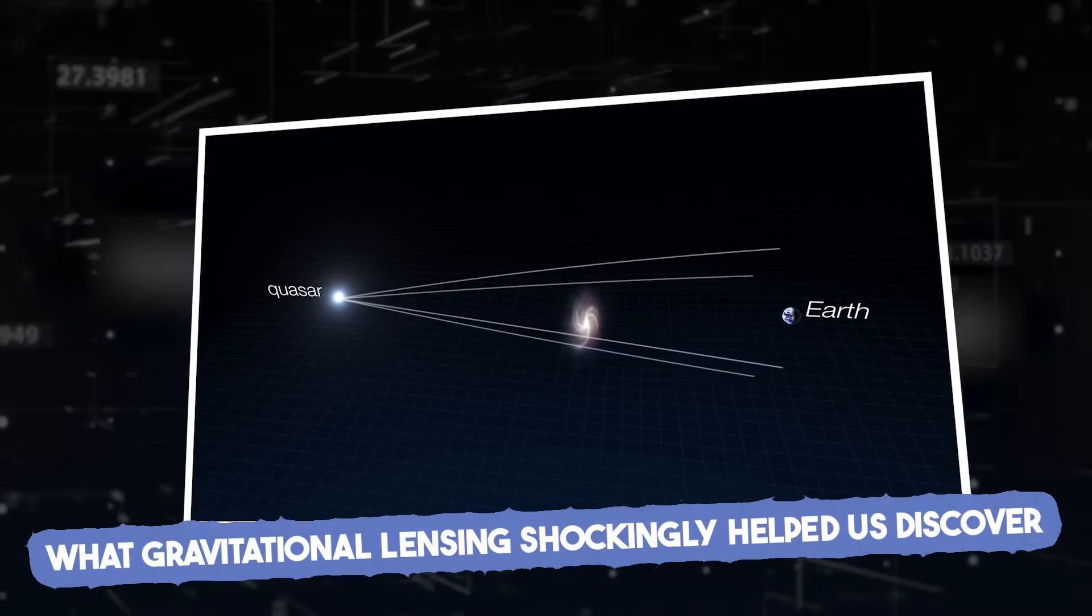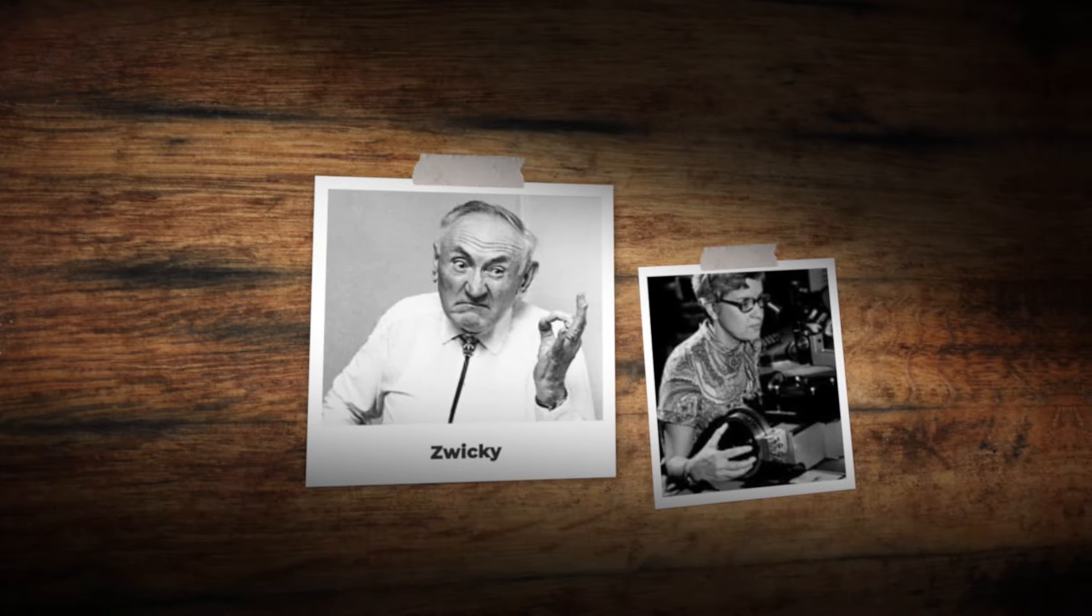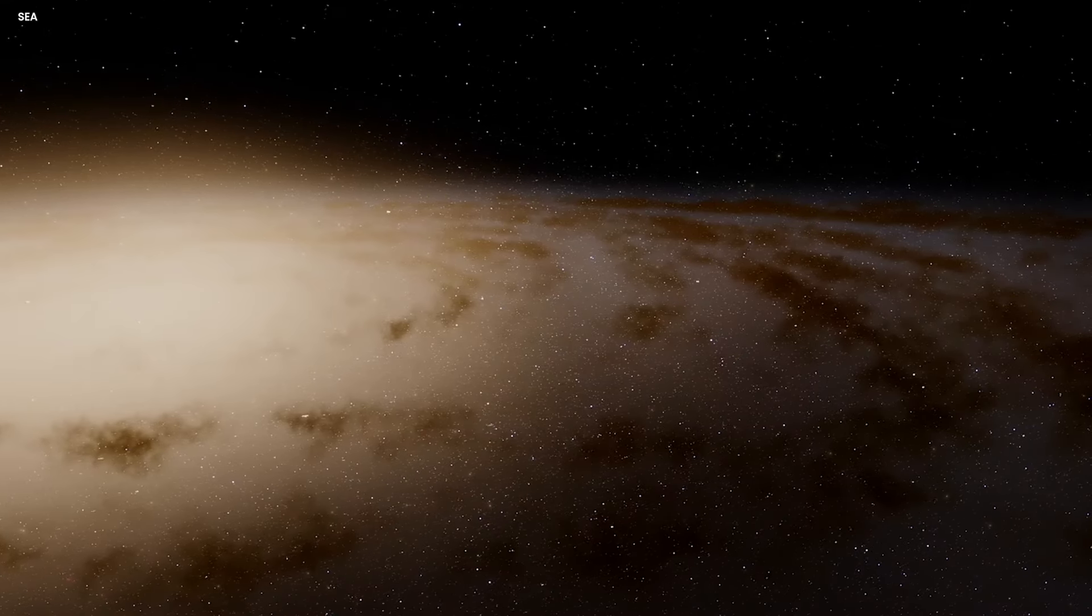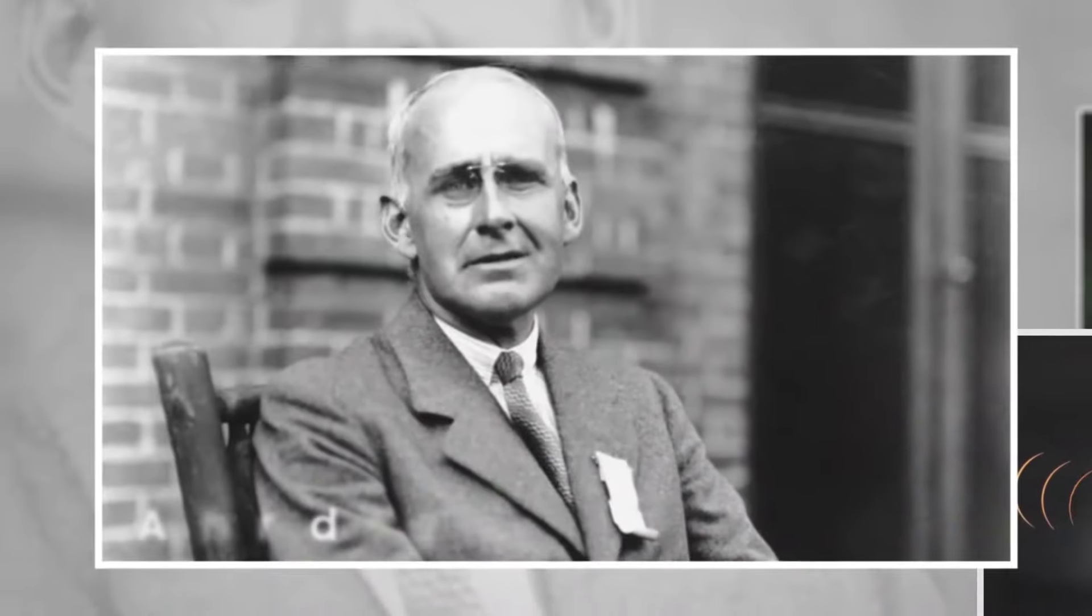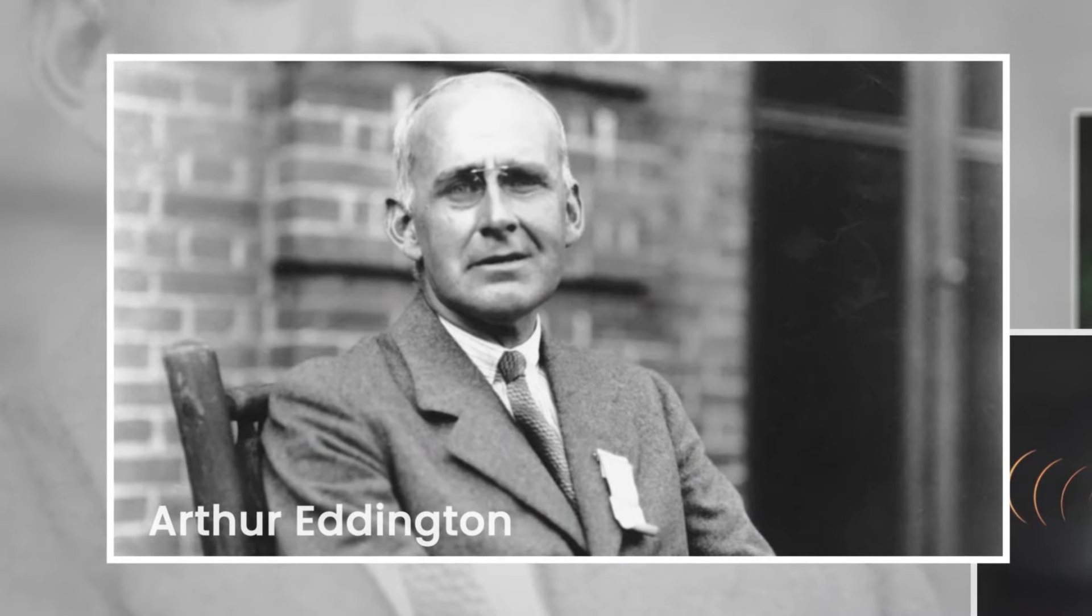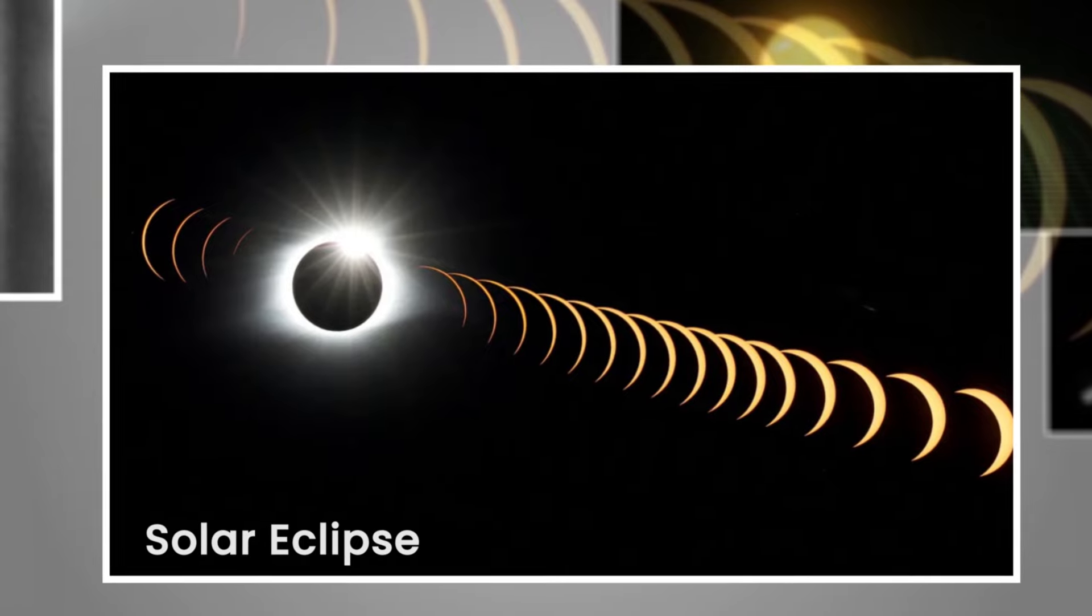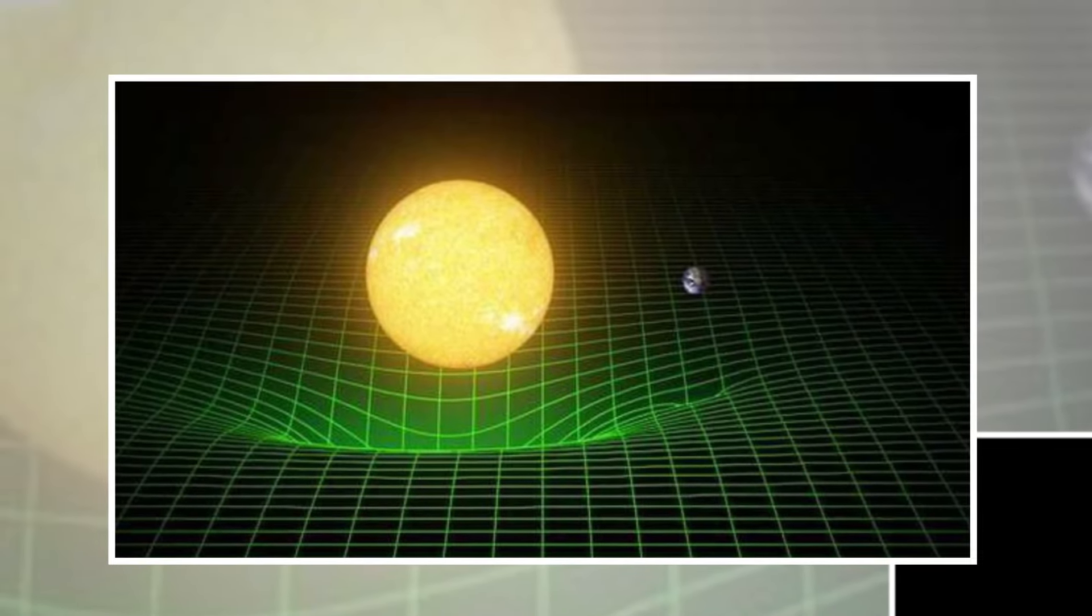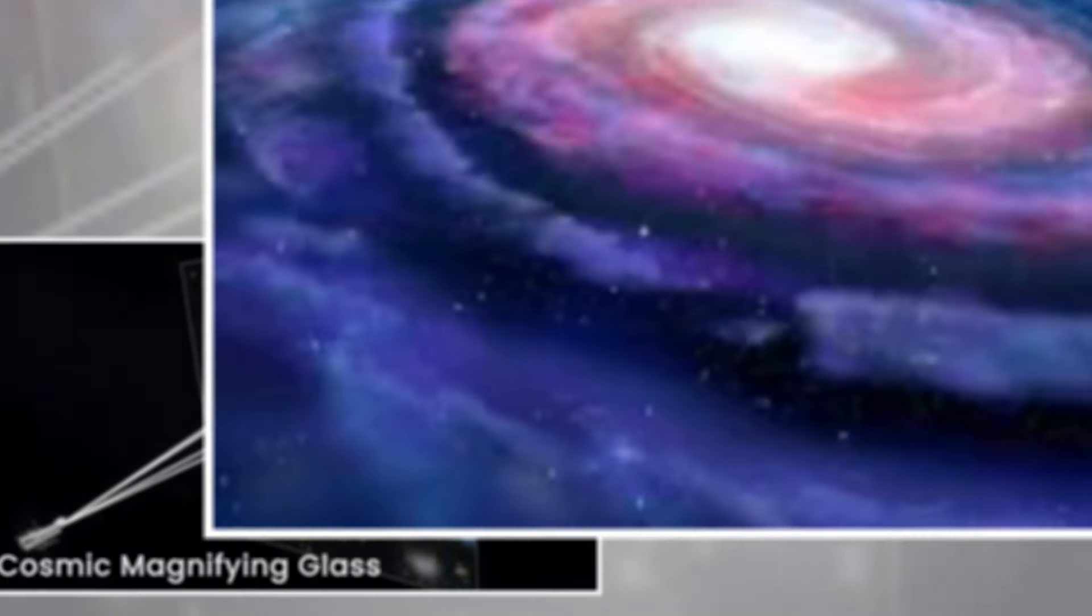What gravitational lensing shockingly helped us discover? The observations of Oort, Zwicky, and Rubin all point in the same direction: Galaxies with stars moving way too fast for the visible matter to explain. But that's just one piece of the dark matter puzzle. Let's talk about another key player in the story, Arthur Eddington. This ingenious astronomer used a solar eclipse to demonstrate that light bends around massive objects like the sun. This phenomenon, called gravitational lensing, is like a cosmic magnifying glass.